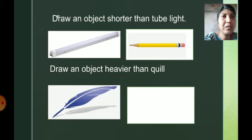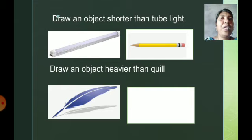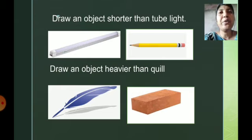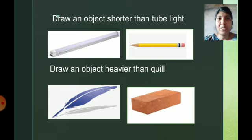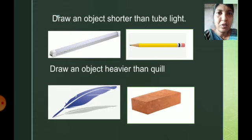Draw an object heavier than the quill. Here, one quill is given. If you try to pick it up, you can easily pick it up because it is very less in weight. You have to find any object that is heavier than the quill. For example, a brick — if you try to pick up a brick and a quill, you will need effort to pick up the brick. So the brick is heavier than the quill. If you find any other object heavier than the quill, you can draw that also. Copy this question down in your notebook.